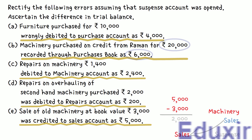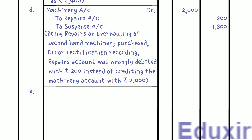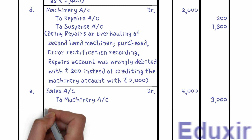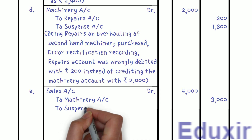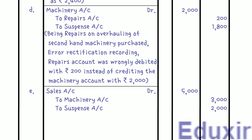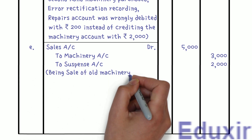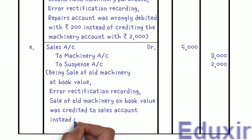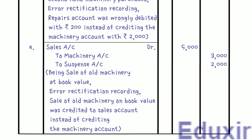Entry 5: Sales Account Dr. 5,000 rupees; Machinery Account Cr. 3,000 rupees; Suspense Account Cr. 2,000 rupees. Narration: Sale of old machinery at book value was credited to sales account instead of crediting the machinery account — Error Rectification Recording. With that, we have completed the journalizing of all the error rectification entries.